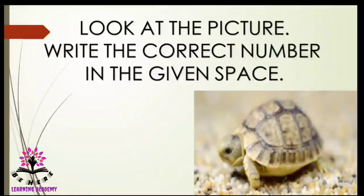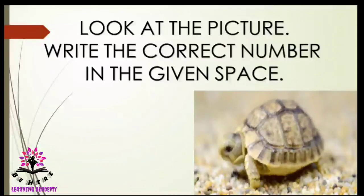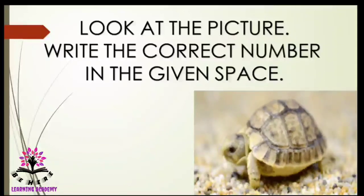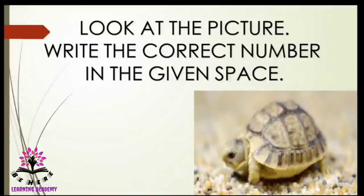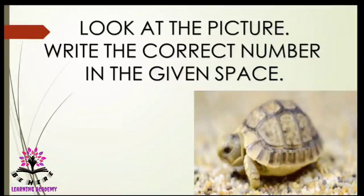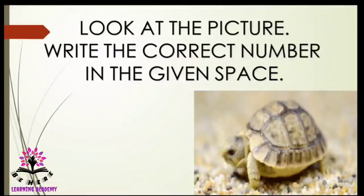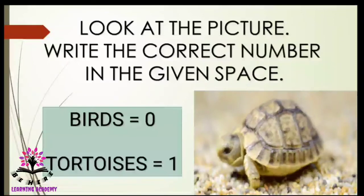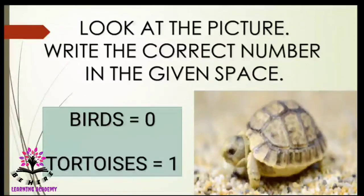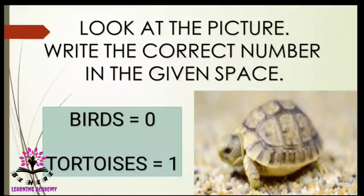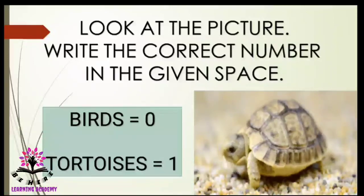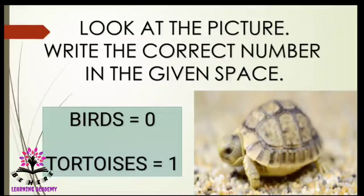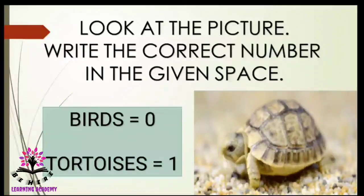What is this? This is a tortoise. How many tortoises are there in the image? There is only one tortoise. Birds is equal to zero — why zero? Because there are no birds in the image. But tortoise is equal to one.